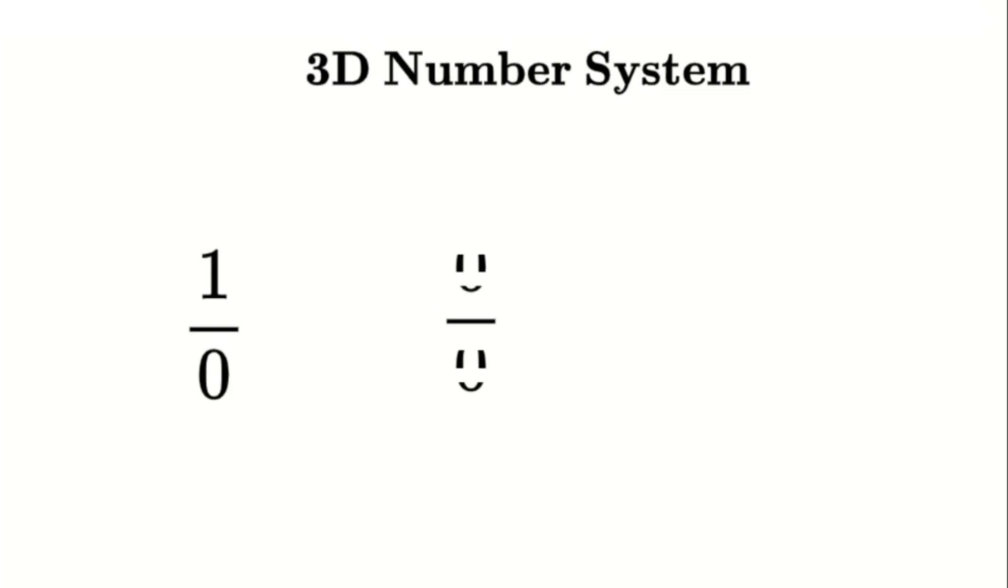One divided by zero is undefined. Zero divided by zero has no meaning. And zero to the power of zero is ambiguous. These are the singularities, the points where our usual mathematical rules just break down. But what if these aren't errors? What if instead of being problems to avoid, they're actually valid numbers in a whole new system.